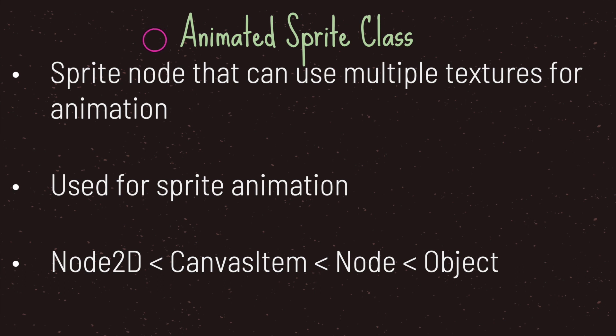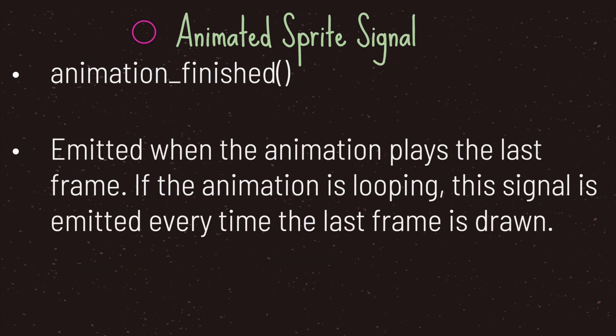The AnimatedSprite class inherits from Node2D, ultimately inheriting from the Node class, so it does have access to lifecycle scripts. It has a signal called animation_finished, which is emitted when the animation plays the last frame. If the animation is looping, this signal is emitted every time the last frame is drawn.